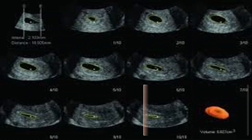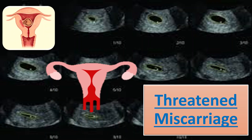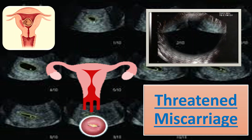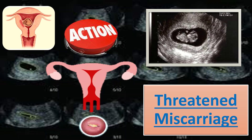Coming to the threatened miscarriage. In this type, vaginal bleeding is present and pain may or may not be present. On per speculum examination, the os is closed. On ultrasound, the gestational sac is positive, the yolk sac may or may not be present, the fetal pole is there, and cardiac activity is present. We reassure the patient, offer a re-scan, advise bed rest, and provide progesterone support.